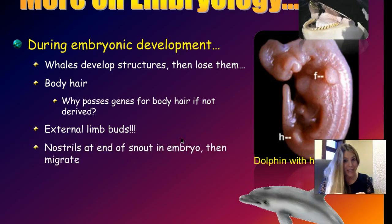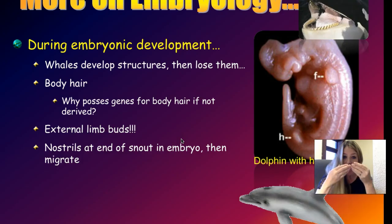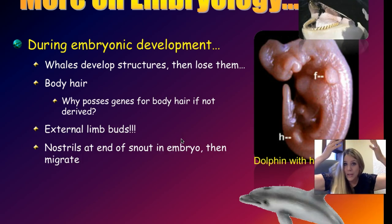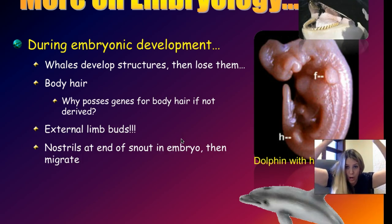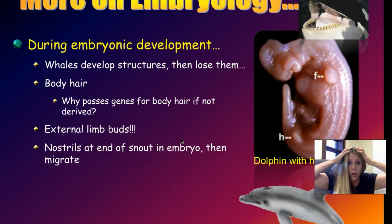Not only the limb buds — whale embryos also have nostrils that start off in the front of the face, just like ours, and during embryonic development they actually migrate up to the top of the head. Whales and dolphins blow water out of the top of their heads and breathe through a blowhole, so these nostrils migrate and fuse into one blowhole during development.